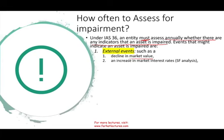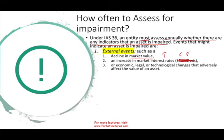An increase in the market interest rate can affect your cash flow, because when you discount your cash flow you use an interest rate — when interest rate goes up, your present value goes down. Economic, legal, or technological changes are also indicators. For example, the municipality of London banned Uber — that was a legal decision. Or there's a new technology on the market that's better, more efficient, and cheaper than yours, making your technology obsolete. The FDA pulling your drug from the market is also a major legal event, or a general economic downturn where demand falls from 10 million to 3 million units.